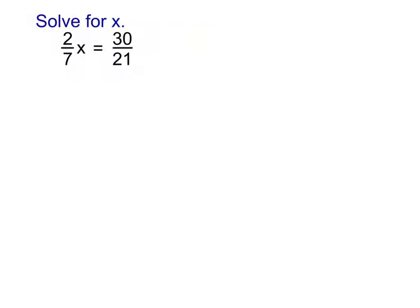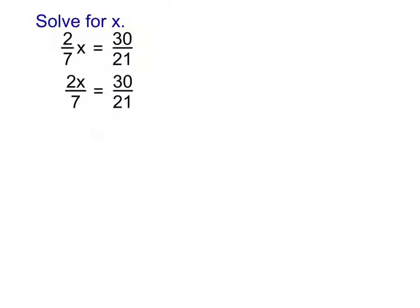With this next problem, for some people it looks way scarier, but actually it's not bad. The trick is that we can rewrite it. Remember that when you multiply a fraction by a whole — so in this case we're doing 2/7 times x — that's the same thing as doing 2/7 times x over 1. So I could just rewrite this as 2x over 7. By doing that as my first step, I now make this into a proportion — just a fraction equal to a fraction — which makes it easy to solve by cross-multiplying.